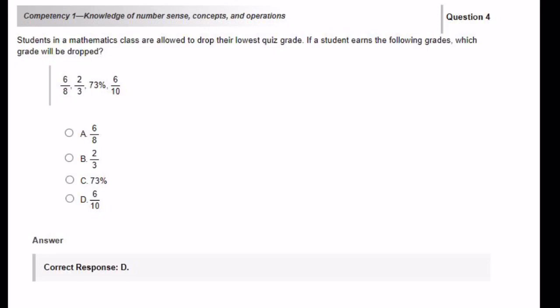Students in a mathematics class are allowed to drop their lowest quiz grade. If a student earns the following grades, which grade will be dropped? I see that I have three fractions and one percent. So what I want to do is change each one of my fractions to a percent. Let's start with the 6 over 8.